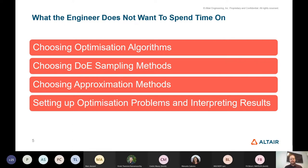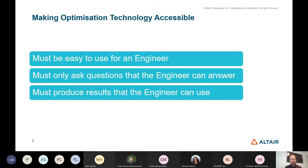Engineers don't want to go to 'optimization land.' They want optimization technology that saves them time without requiring too much investment. With those thoughts in mind, what do we need to do to make optimization technology accessible to engineers? There are three key areas. The first — and most obvious — is make it easy to use. If you make it easy to use, people will start using it.